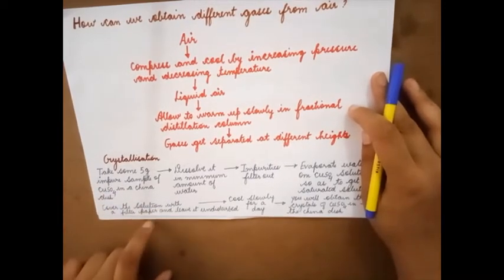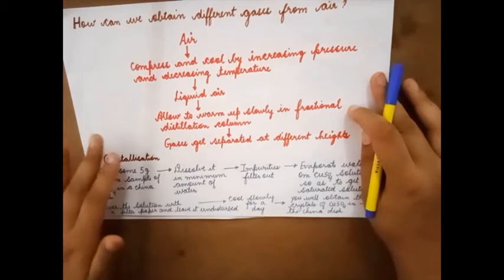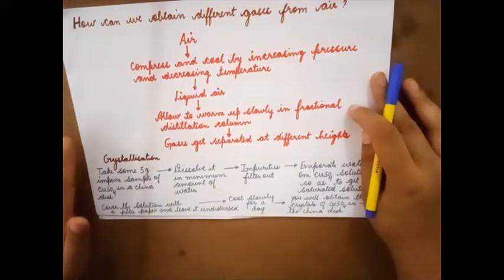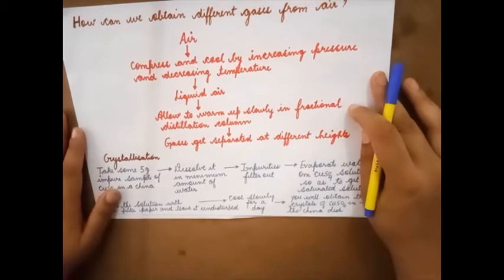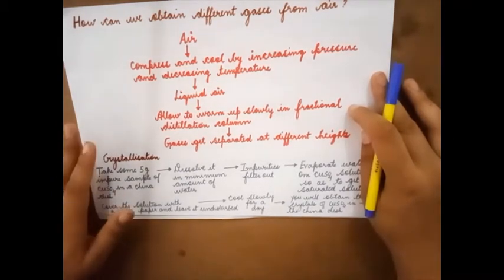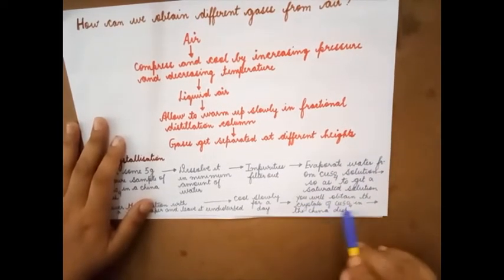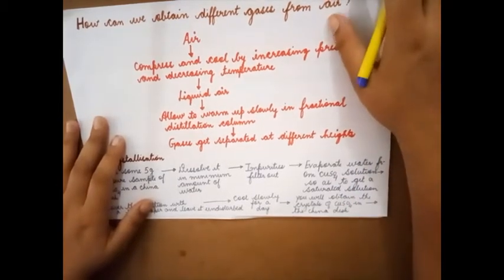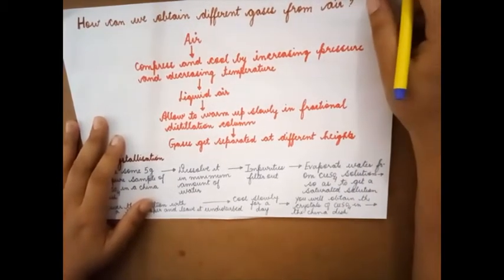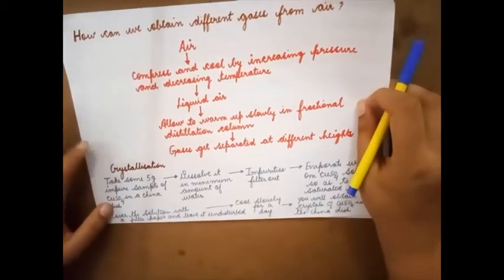Now cover the solution with the filter paper and leave it undisturbed. Then it will slowly cool. Finally you will obtain the crystals of copper sulfate in the china dish. This is the method of crystallization.